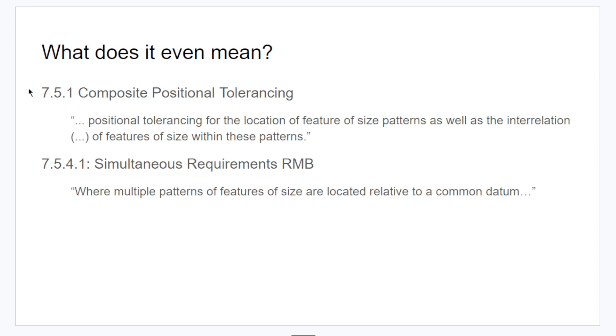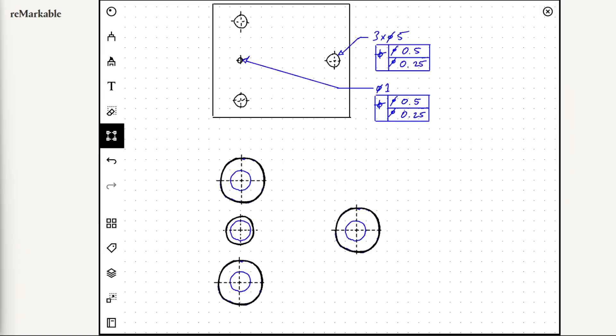We're taking advantage in the drawing of a couple things from the standard. One is composite positional tolerancing, and the second one is simultaneous requirements. And sometimes designers aren't aware of this, but based on the original post, I imagine the designer was aware of this.